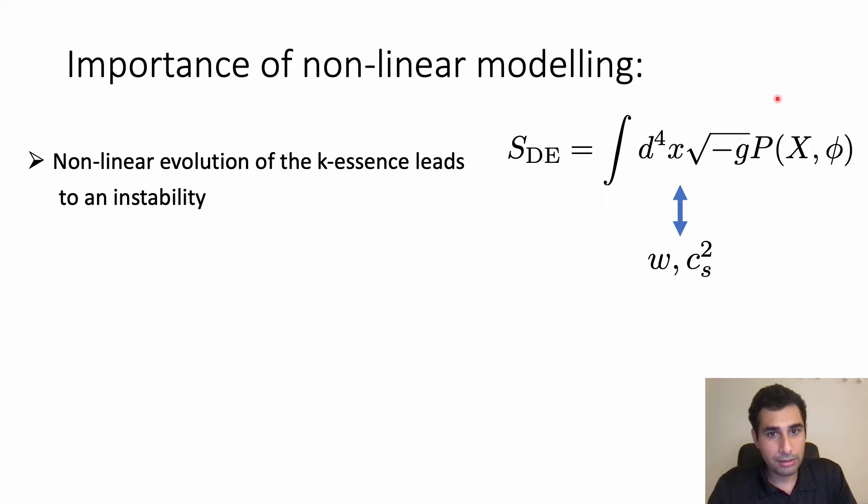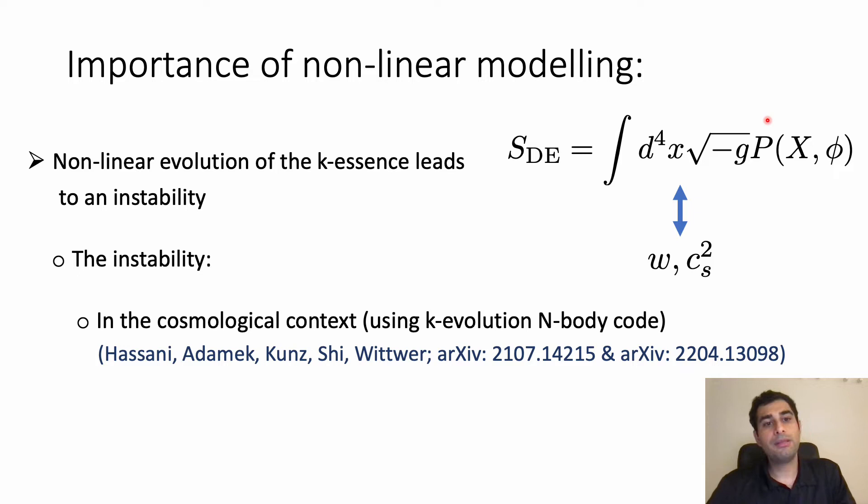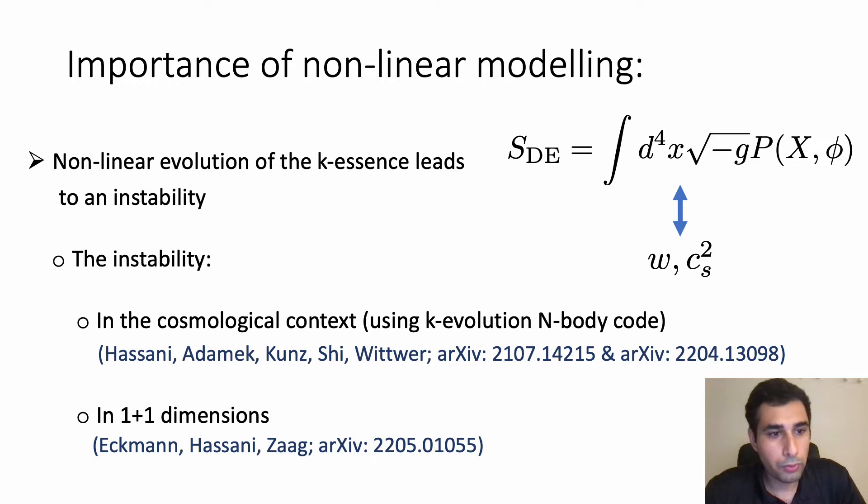I'm going to discuss the instability in the cosmological context which are discussed in details in these two publications. I'm going to use the k evolution n-body code and also I'm going to show you that if we simplify these equations in one plus one d dimensions analytically it leads to an instability.